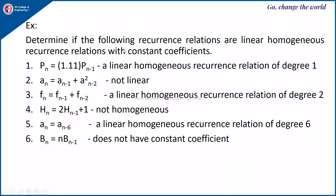Now, determine if the following recurrence relations are linear homogeneous recurrence relations with constant coefficients. For p(n) equals some constant times p(n-1): transferring to the left-hand side makes the right-hand side 0, so it is a linear homogeneous recurrence relation of degree 1. However, if you observe a(n-2) squared, it is not linear because the power is 2 — linear means the power must be 1.